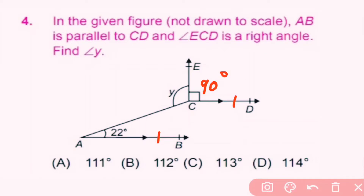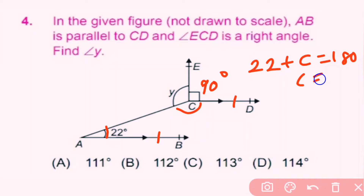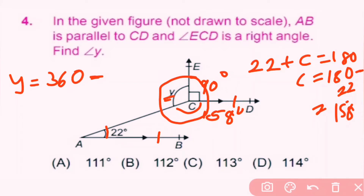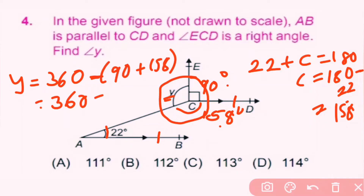This angle plus the co-interior angle equals 180 degrees, so 22 plus C equals 180, giving C equals 158 degrees. Now angle y equals 360 minus the sum of the two angles: 90 plus 158 equals 248, and 360 minus 248 equals 112 degrees. So y equals 112 degrees. B is the correct answer.